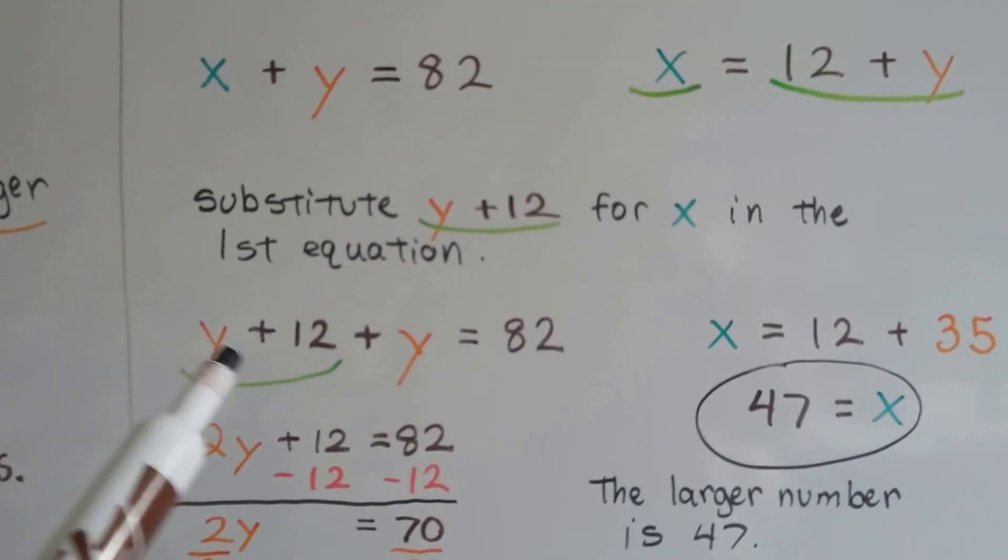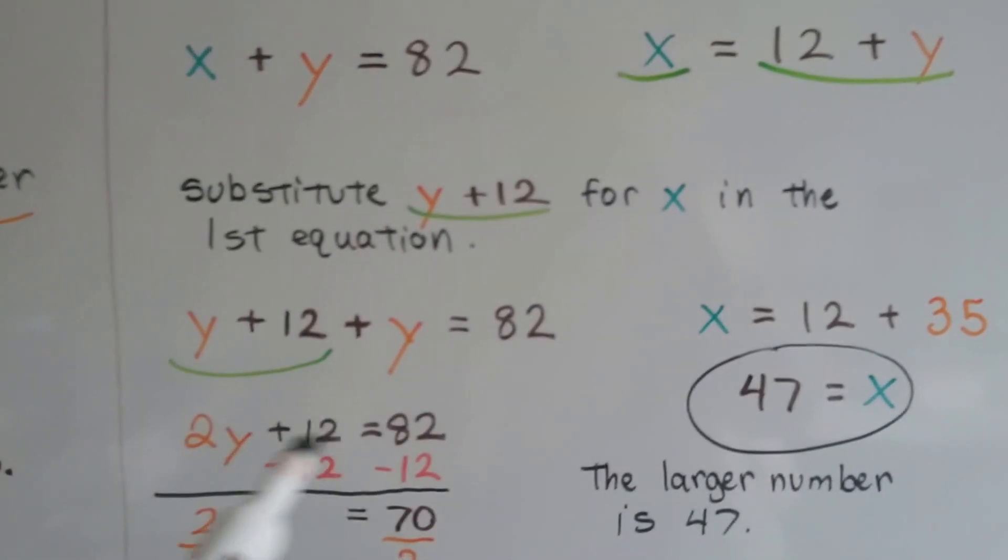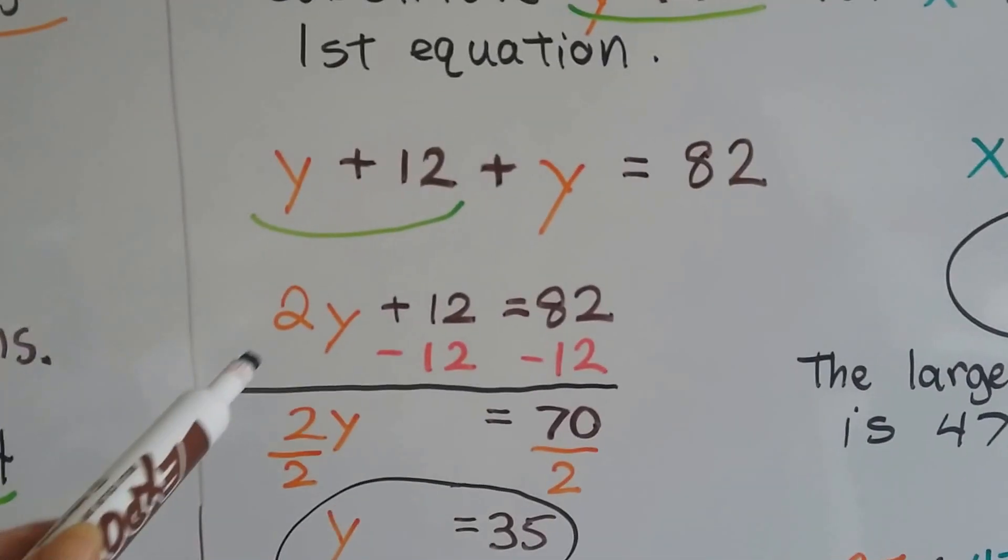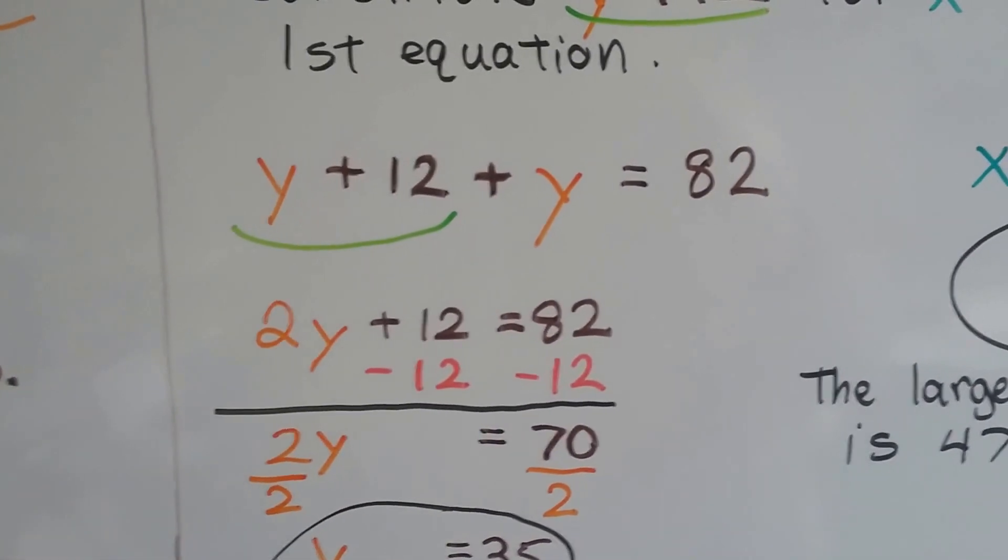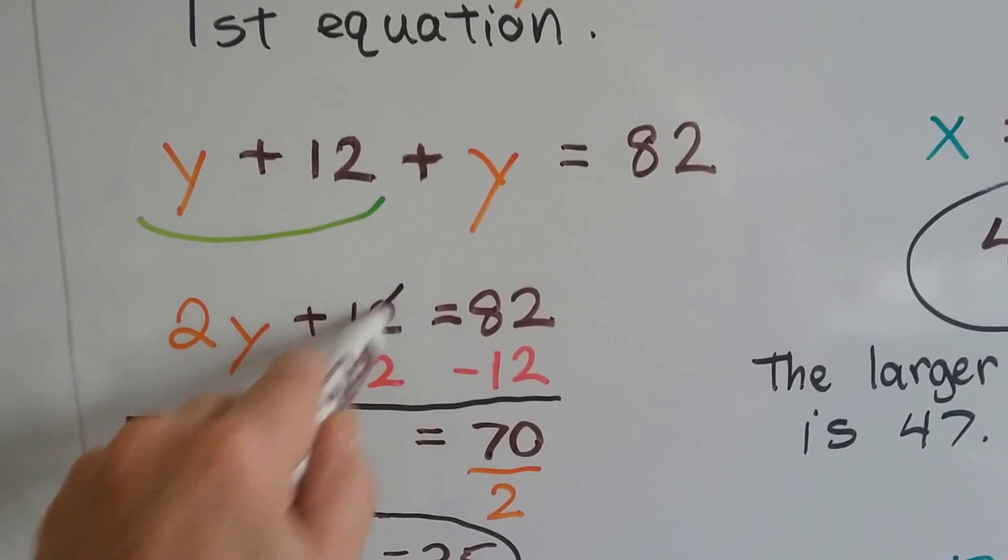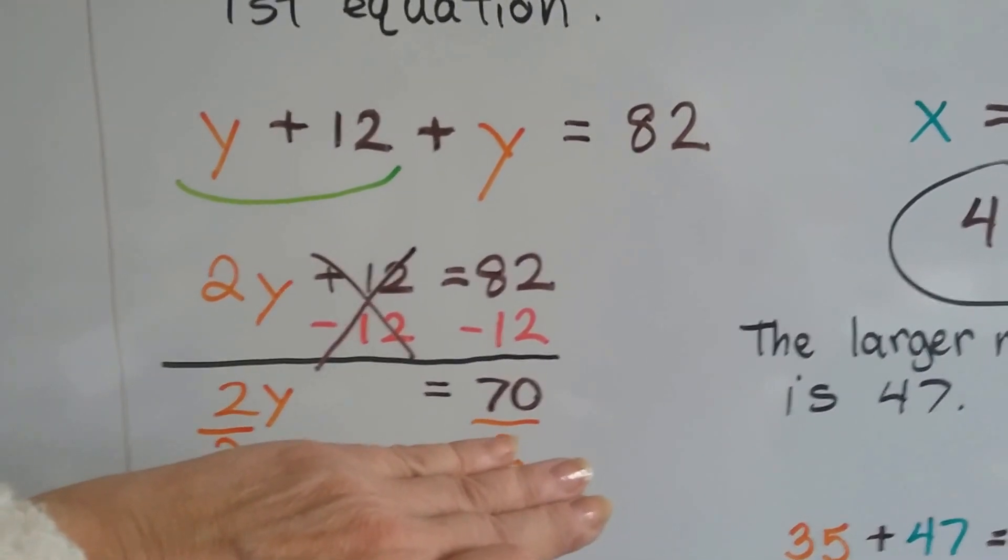So we've got y plus 12 plus y. Well, that gives us 2y plus 12 when we combine like terms. And then to isolate y to one side to find out what y is equal to, we could subtract 12 from each side to eliminate this 12. And now we get 2y equals 70.